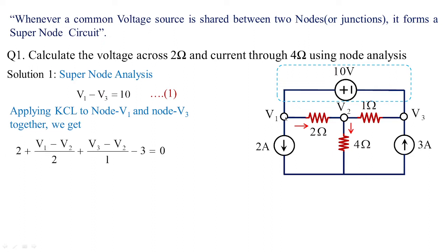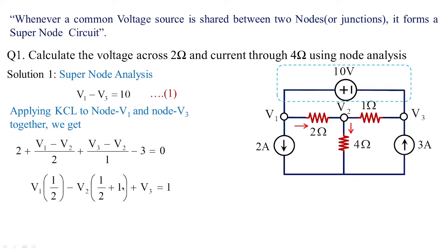At node 1 you can see 2 amperes is incoming — that's why positive 2 — and you have (V1 minus V2)/2 which is another branch current. We add the node 3 parameters also: (V3 minus V2)/1 is another branch current, and 3 amperes is coming towards node 3 — that's why minus 3. Simplifying this equation we get: 0.5·V1 minus 1.5·V2 plus V3 equals 1. This is equation 2.